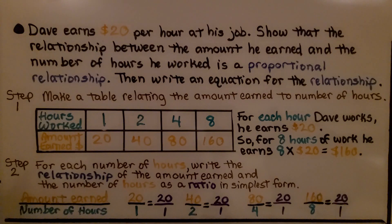Step 2, for each number of hours, write the relationship of the amount earned and the number of hours as a ratio in simplest form. So now, even though the table has hours on the top and amount earned on the bottom, we're going to flip these around and we're going to put the amount earned on top and the number of hours on the bottom.